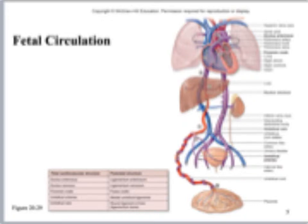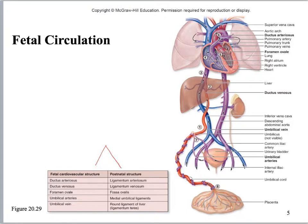Here we've got a slide that gives you both the fetal name and the postnatal name — basically the adult or child form — after the fetus takes its first breath. When it's born as a neonate, that changes the pressure in its thoracic and abdominal cavity, which causes all of these structures to collapse, snap shut, take their adult form, and turn into scar tissue. Let's look at the placenta right here.